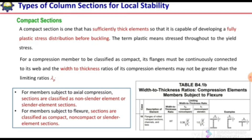Types of column sections for local stability are based on local buckling. We can divide columns into three different types. When subjected to flexural loading, we classify them as compact section, non-compact section, or slender section. If the column is subjected to only axial compression with no eccentricity or flexural load, we classify it as non-slender or slender column.